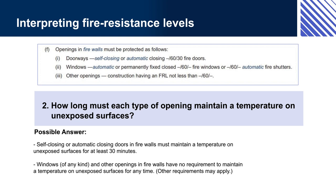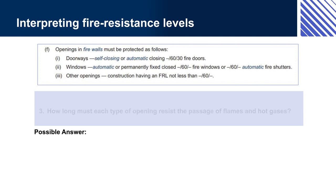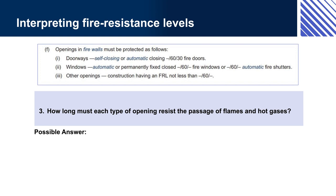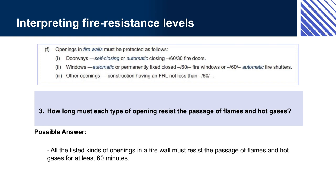Other requirements may apply. This is the insulation portion of the FRL, i.e., the third value. Question 3: How long must each type of opening resist the passage of flame and hot gases? Answer: All the listed kinds of openings in a firewall must resist the passage of flames and hot gases for at least 60 minutes. This is the integrity portion of the FRL, i.e., the second value.